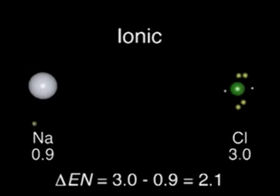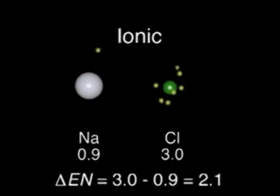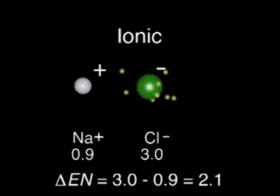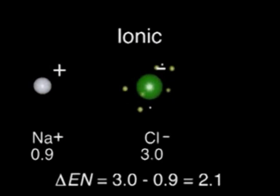When sodium and chlorine react, the chlorine atom removes sodium's valence electron and becomes a chloride ion. The less electronegative sodium atom cannot compete for electrons and becomes a sodium ion. The attraction between the ions is an ionic bond.